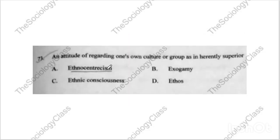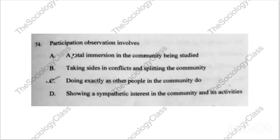Question seventy-three is about ethnocentrism — we have discussed this many times. It is where we consider our own culture superior to others' cultures. Question seventy-four: 'Participant observation involves what?' Options include total immersion in the community being studied, taking sides, doing exactly as people do, or showing sympathetic interest. The correct answer is A — total immersion — meaning you completely merge into that community.